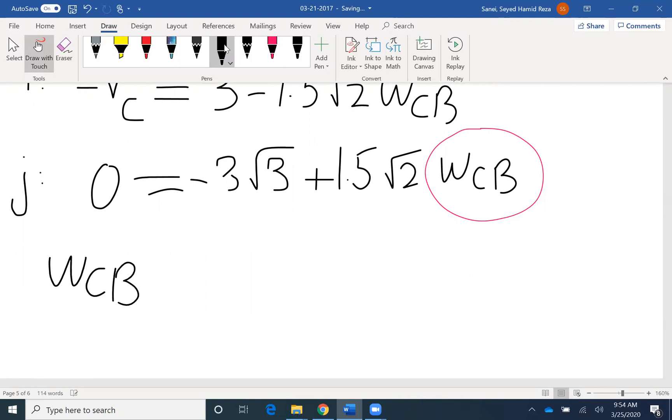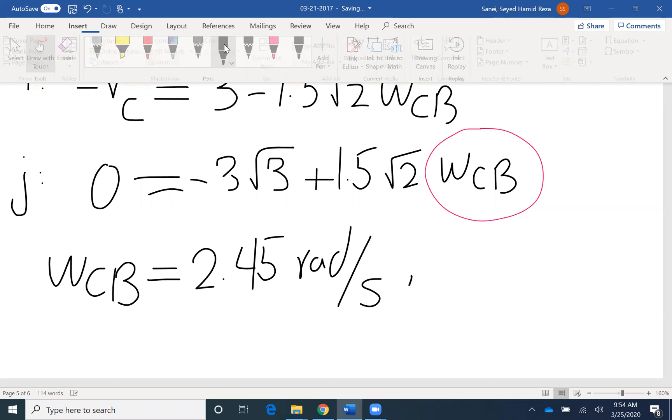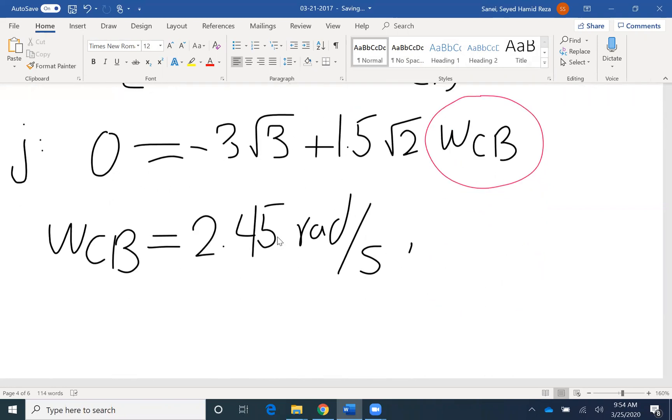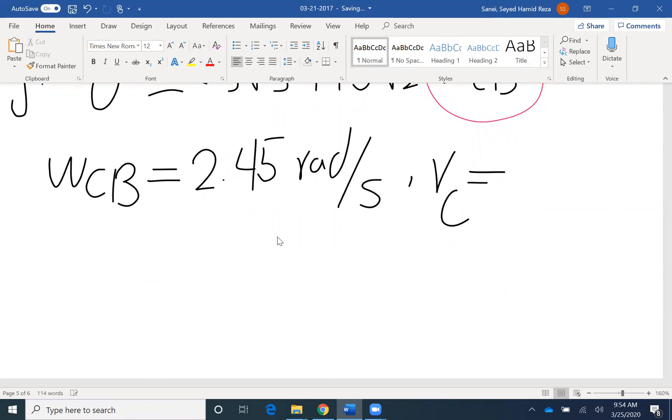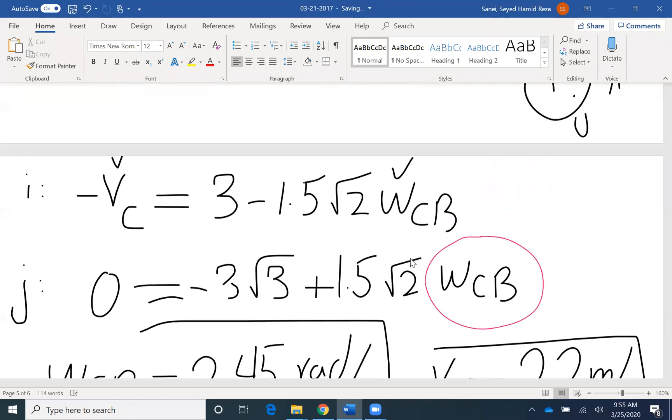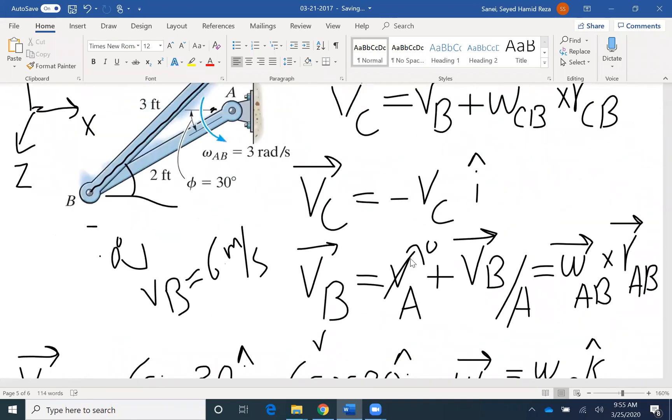From that, omega CB would be 2.45 radians per second. And if you plug it into the first equation, once we have omega CB, we can find VC to be 2.2 meters per second. These are the two unknowns. We found both values to be positive, so the direction that we assumed was correct.